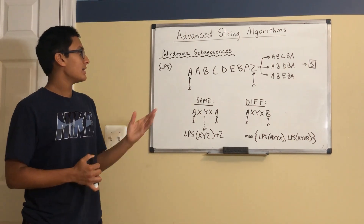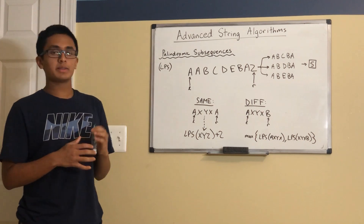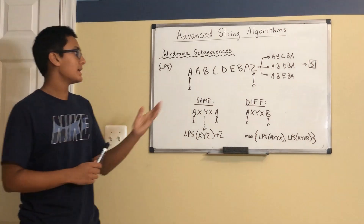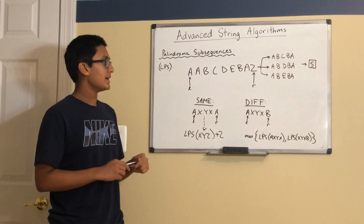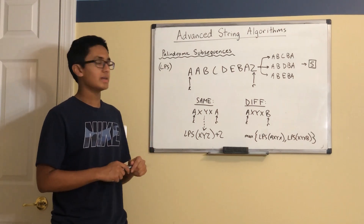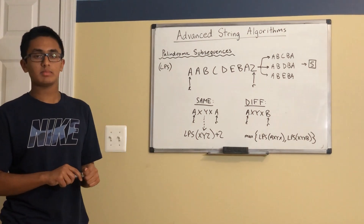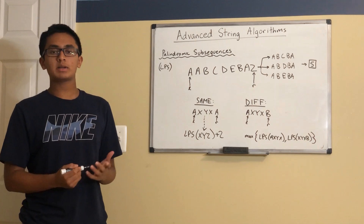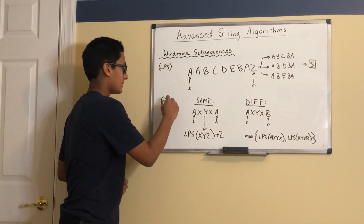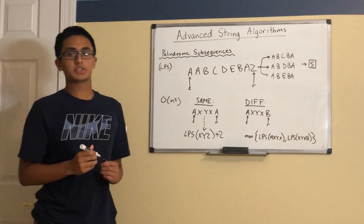For example, in this string, the longest palindromic subsequences that are produced are ABCBA, ABDBA, and ABEBA, all of which have length 5. The overall time complexity for this task is O(n²), where n is the length of the string.